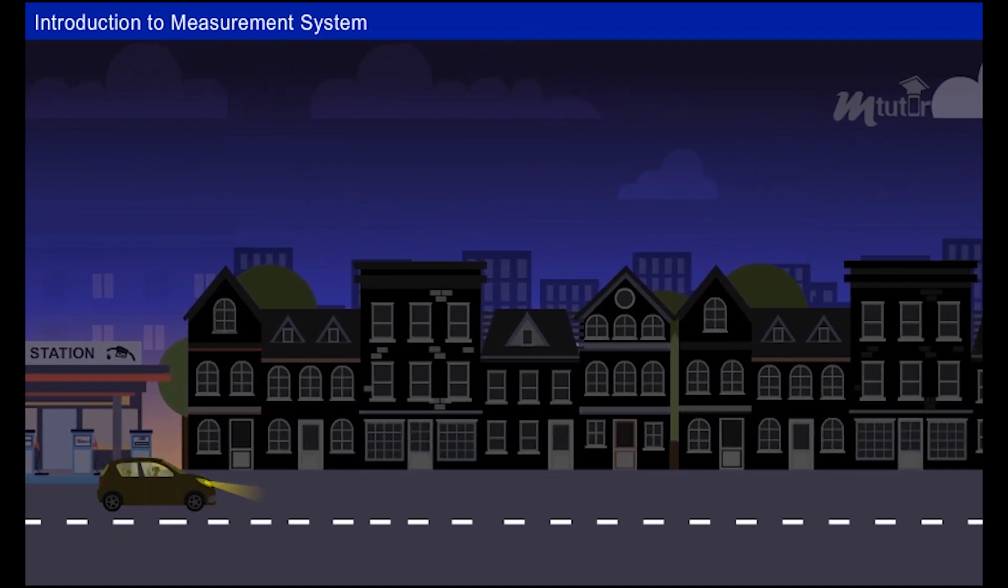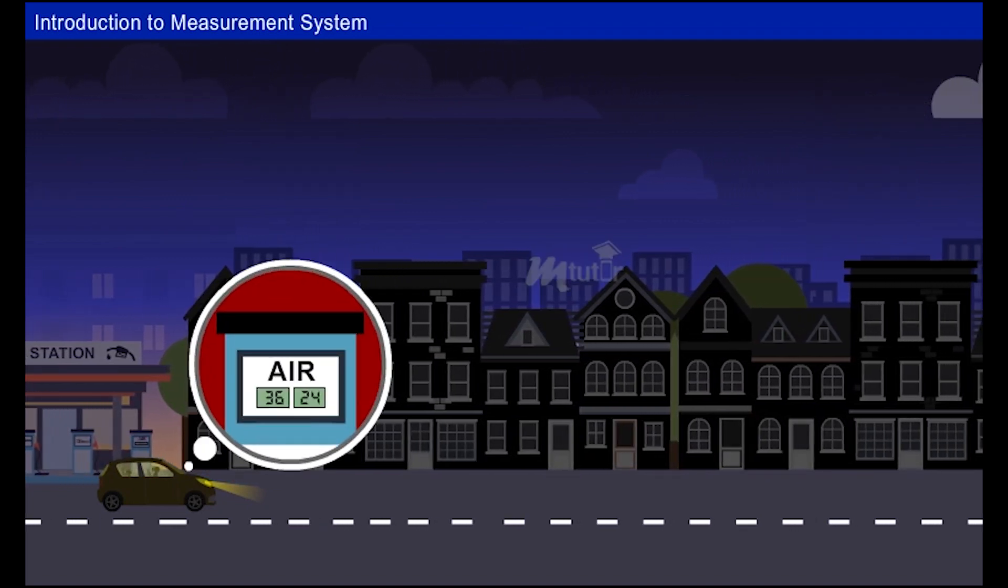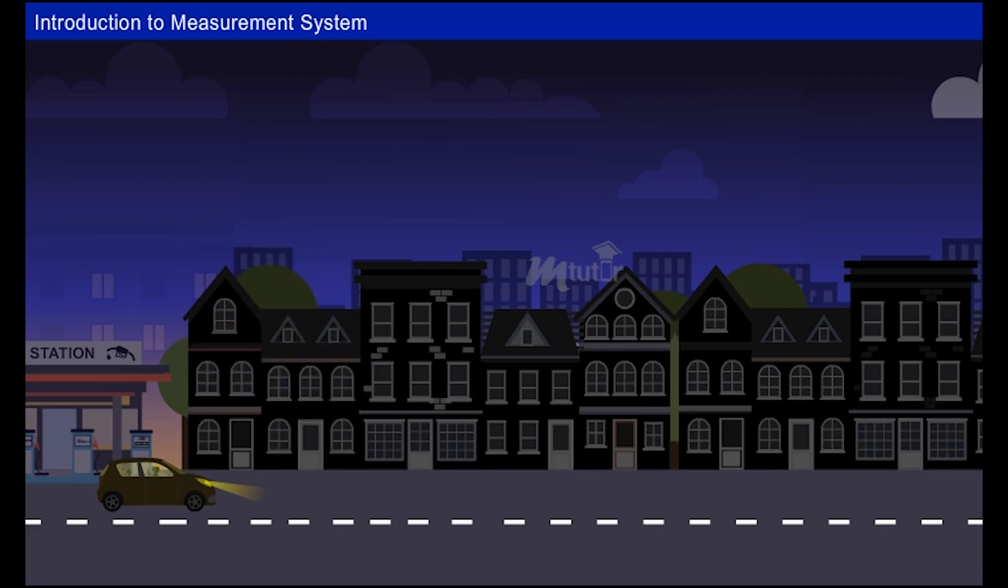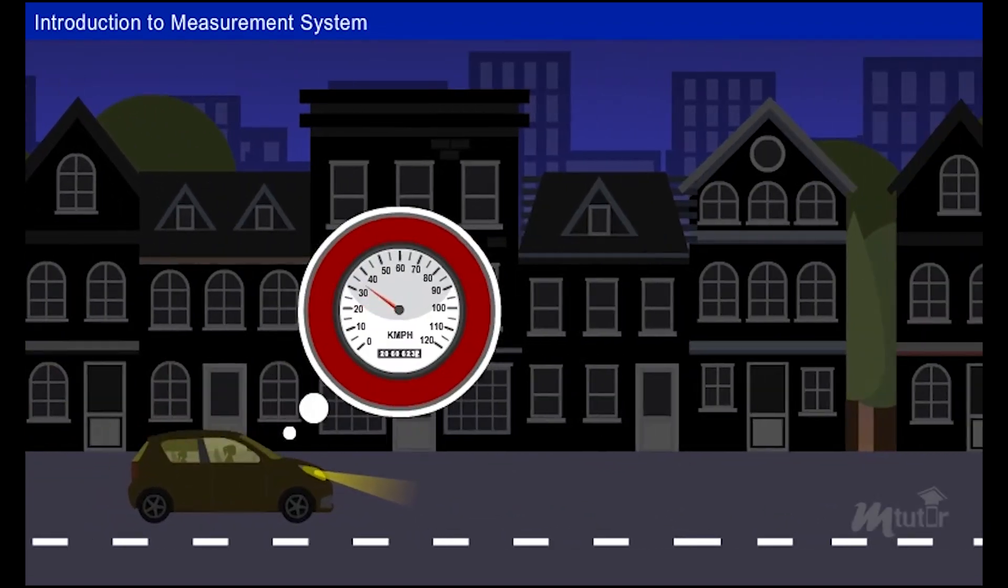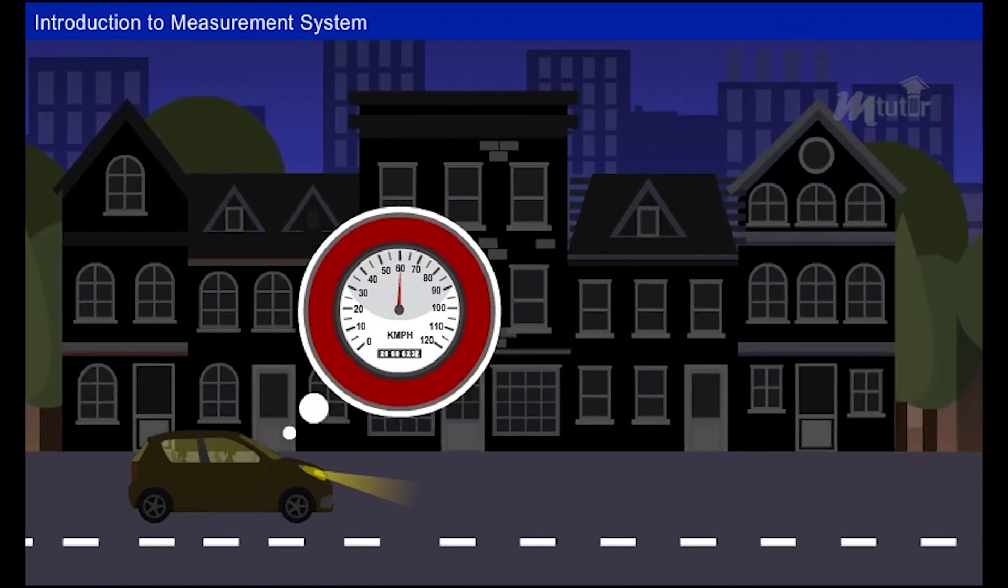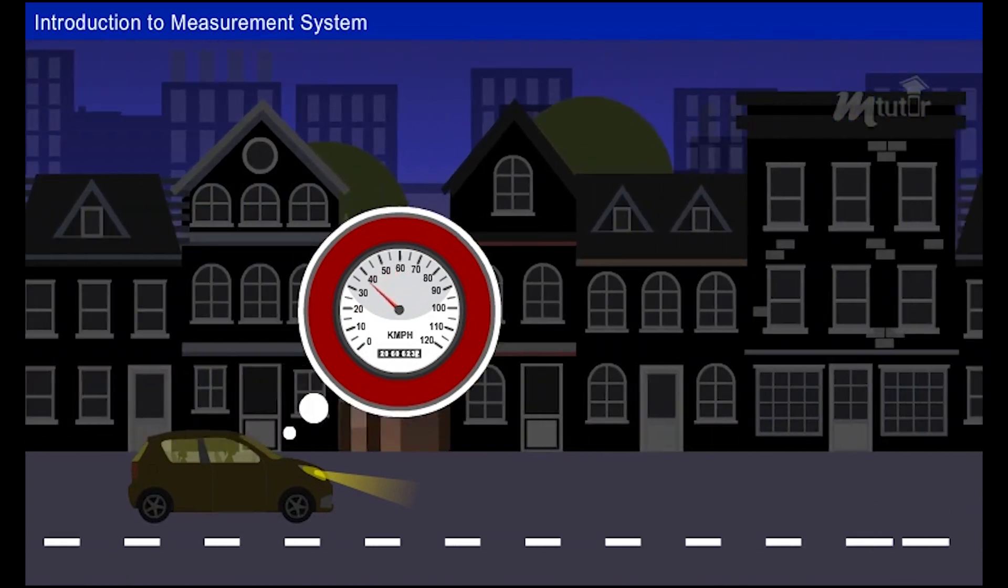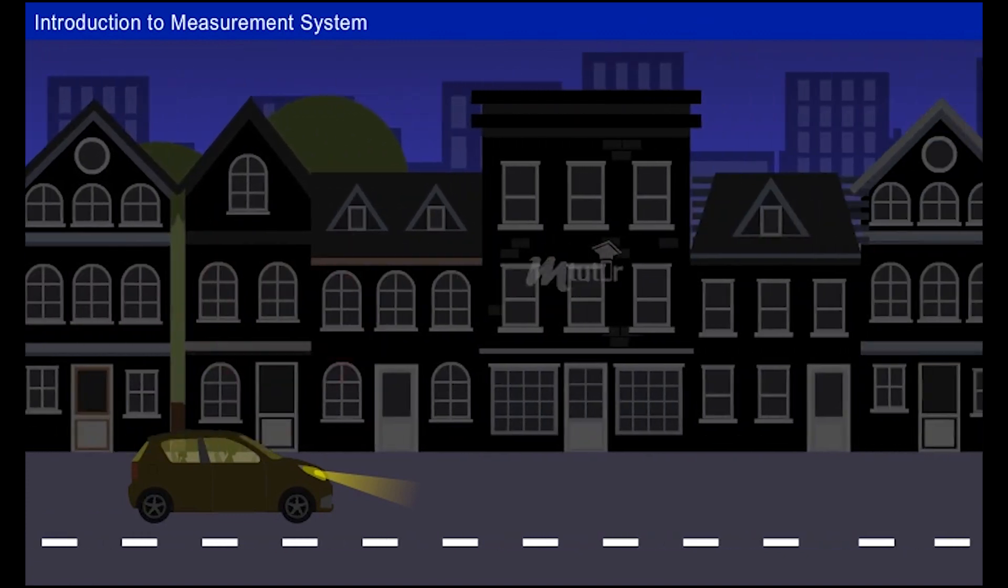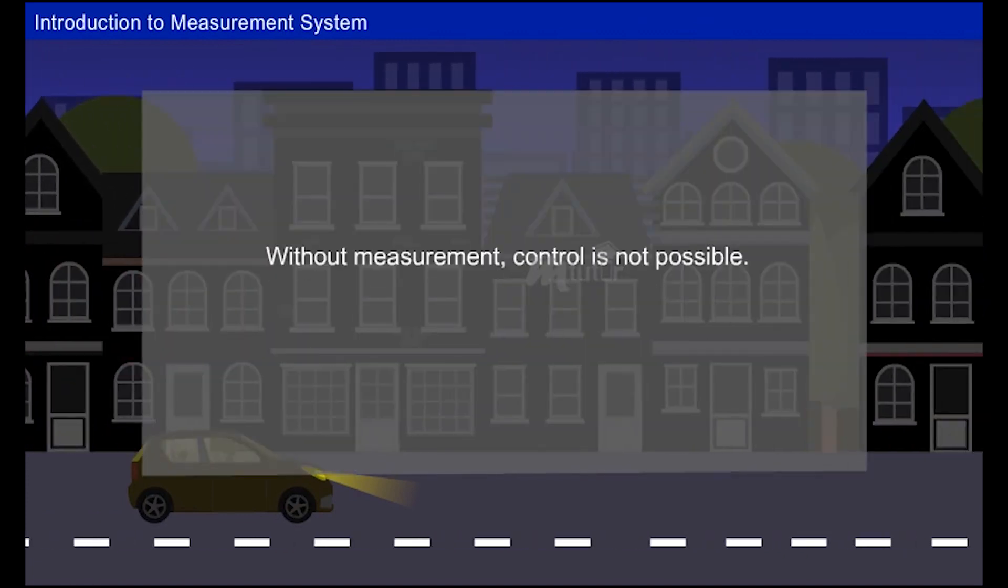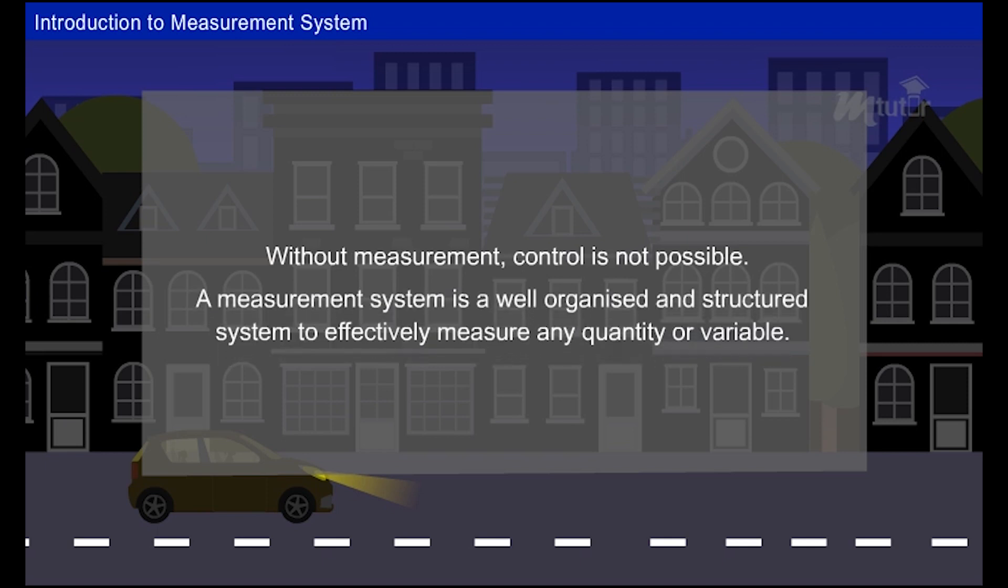While pumping air into the car tire, there is a meter to monitor the air pressure. To monitor the speed, there is a speedometer in the car. It is only the measurement of any variable or entity that helps us to make or break control over that entity. Without measurement, control is not possible. Hence, measurement is very important in our day-to-day life.